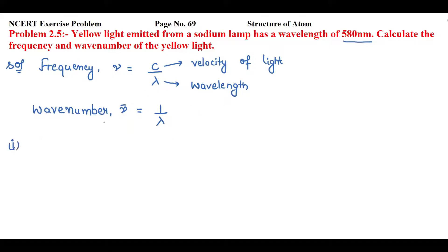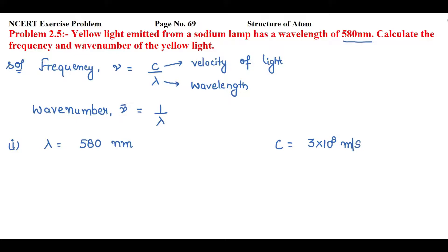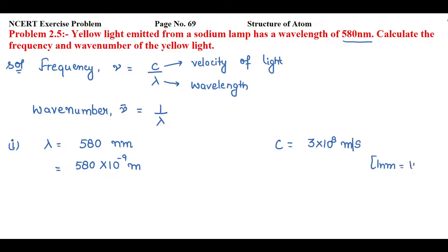First, lambda is 580 nanometers and the velocity of light c is 3 × 10⁸ meters per second — remember this value. Since c is in meters but wavelength is in nanometers, we need to convert: 1 nanometer equals 10⁻⁹ meters. So 580 nanometers equals 580 × 10⁻⁹ meters.